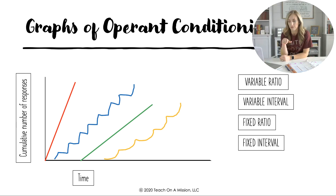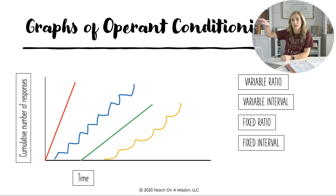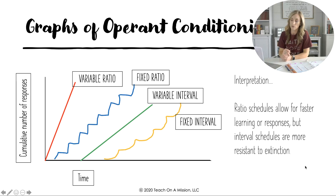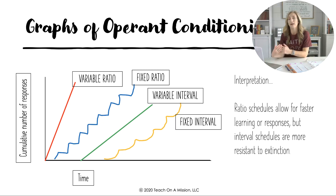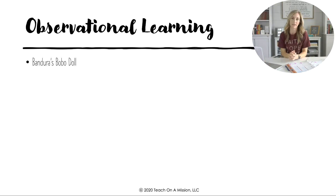Here is a graph of the schedules of reinforcement showing cumulative number of responses over time, how quickly the behavior is acquired, and how resistant to extinction it is. The interpretation: ratio schedules allow for faster learning or responses, but interval schedules are more resistant to extinction and therefore technically stronger.